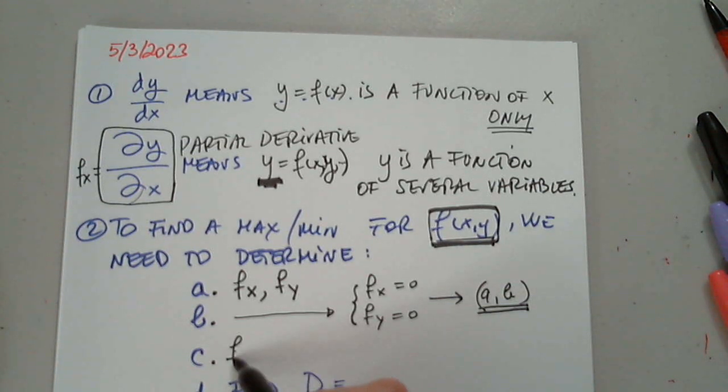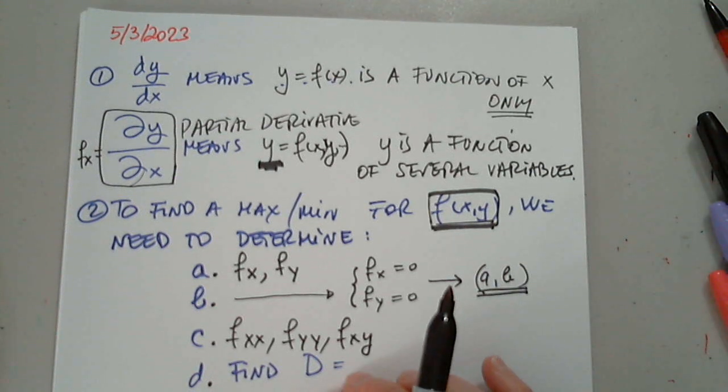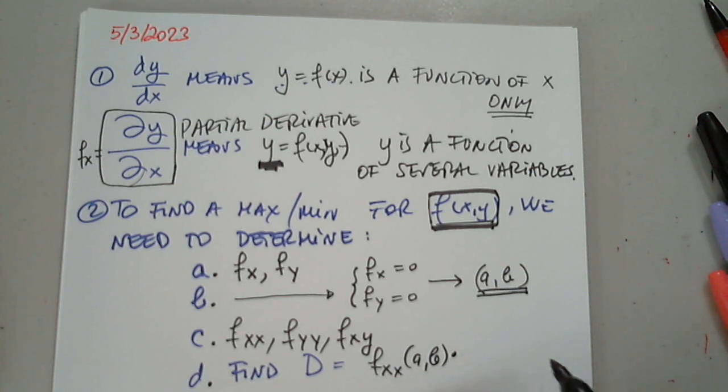fxx, fyy, and fxy. Excellent. Why? Because we need to do this. fxx evaluated at a comma b times fyy also evaluated at a comma b. We multiply these two minus fxy evaluated at a comma b, but we have to square this number. Awesome.